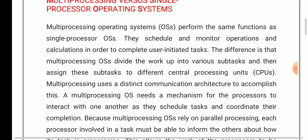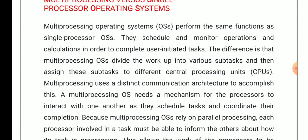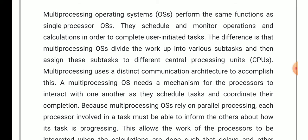Here we have the basic difference between multi-processing versus single processor operating systems. In a multi-processing system, we have parallel processing because we divide our task into subtasks and then assign these subtasks to different CPUs. Whenever we use the concept of parallel processing, we require a special mechanism so that our processors can interact with each other while scheduled to perform a specific task.